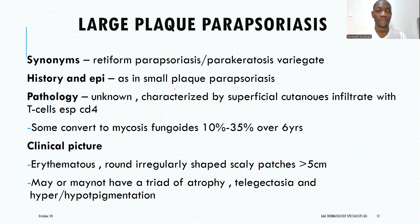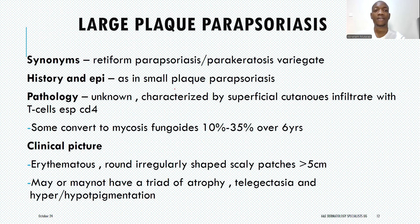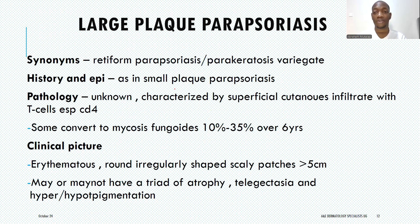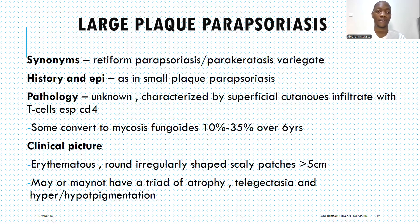Proceeding to large plaque parasoriasis — in this case, it is also called retiform parasoriasis. Some literature also calls it parasoriasis variegata or variegated parasoriasis. It is similar in some ways to small plaque parasoriasis, and its pathology is not yet fully known. It is characterized by a superficial cutaneous infiltrate with T-cells, especially CD4 cells. Up to 35% of cases can convert to overt mycosis fungoides over the course of about six years.